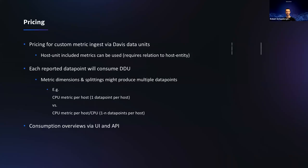Coming to a less technical but also interesting topic: pricing. We're talking about custom metrics here that can be originated alongside a OneAgent or pushed via the public API. The underlying pricing model is Davis Data Units — every data point delivered counts. You can leverage the host-included custom metrics budget if the metric is related to a host entity where a OneAgent is deployed. If not, it simply consumes Davis Data Units. All information is available in the DDU consumption screens with a breakdown per metric and per entity.